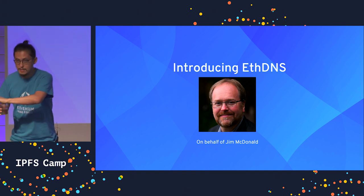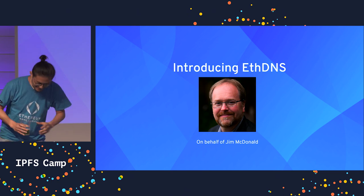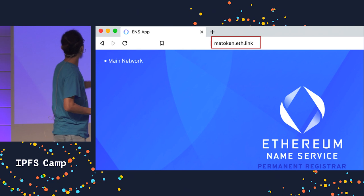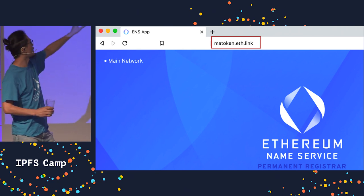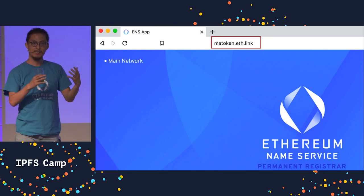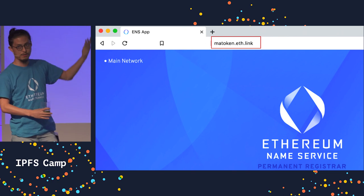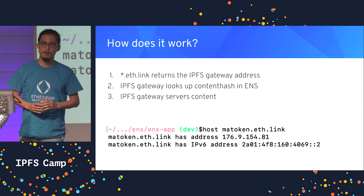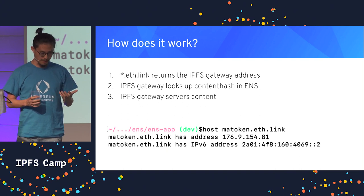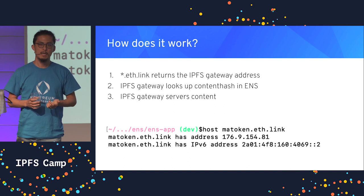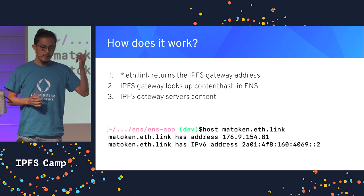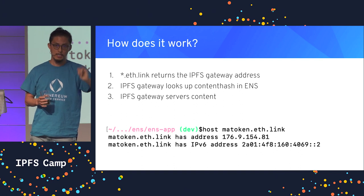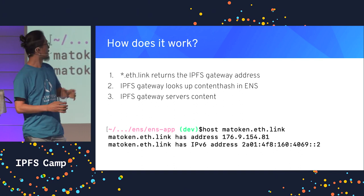So introducing eth.link! It looks so simple, but it has a lot going on. Now you have matoken.eth.link and he has the whole ENS Manager in IPFS. You can access this in any browser. What he did underneath is he created a plugin for the DNS server which integrates with the IPFS gateway and ENS. So if you try to resolve matoken.eth.link, it strips the .link, goes to the Ethereum address to find the IPFS hash, asks the IPFS gateway, and then renders it.